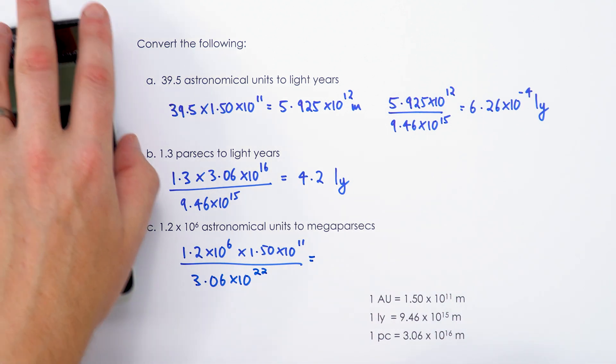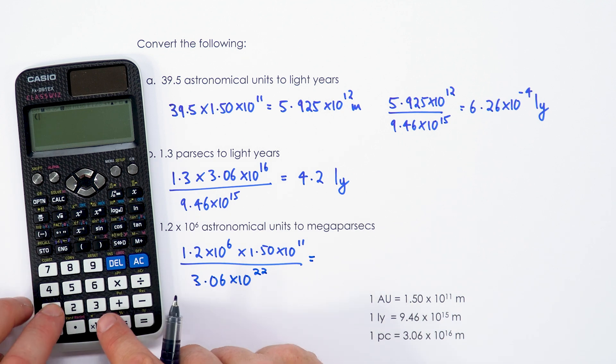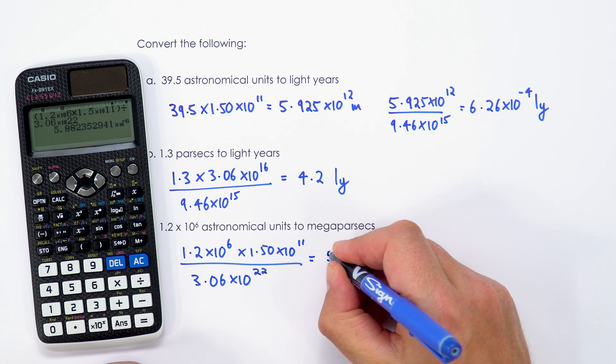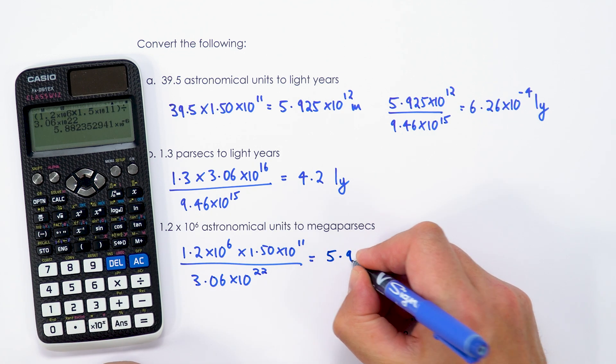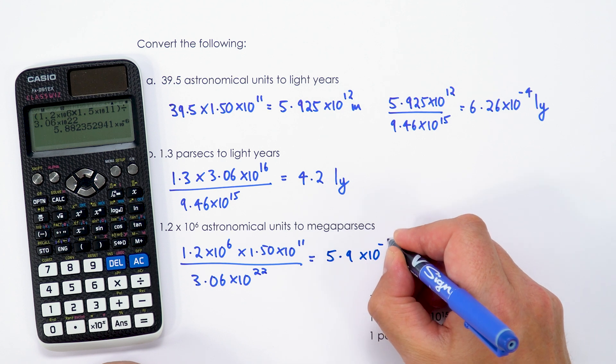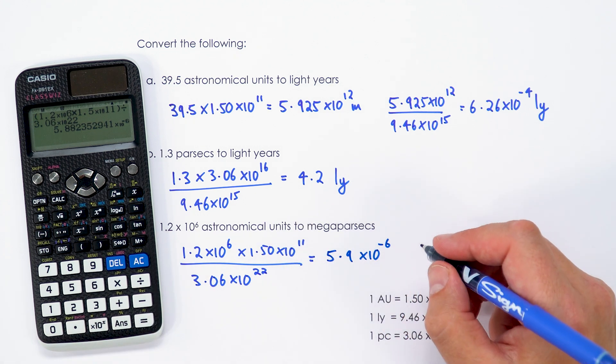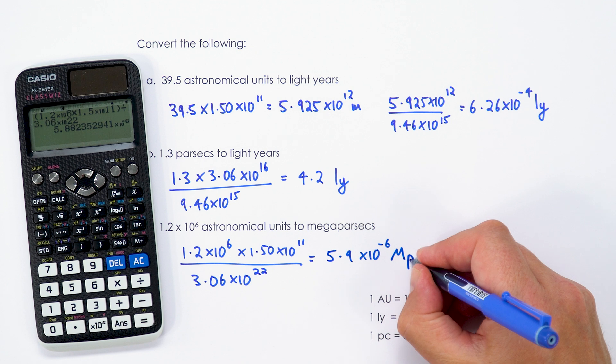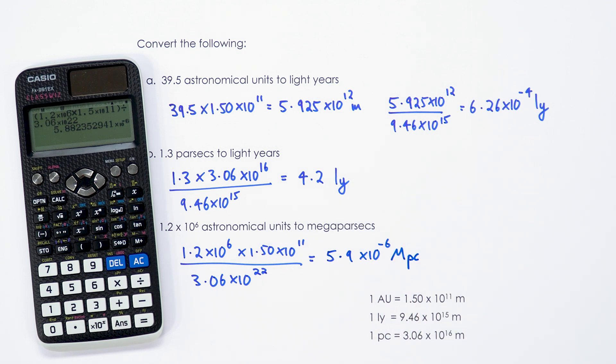And then we're going to do, again, on the calculator, we're just going to work all of this out. So I'm going to give this as 5.9 times 10 to the minus 6. And it's a megaparsec, so it's going to be a capital M for mega and then PC, the unit of parsec. So that would be my approach to that question there.